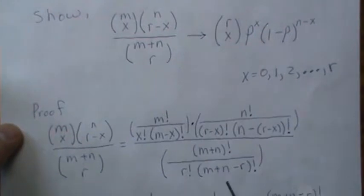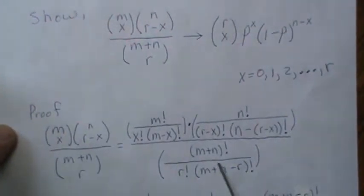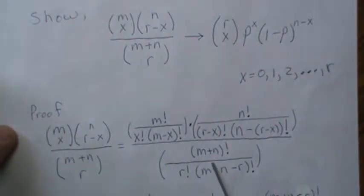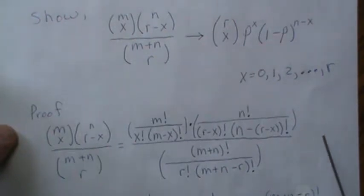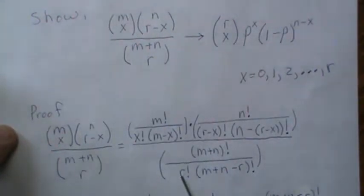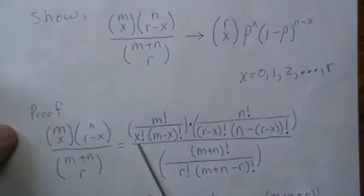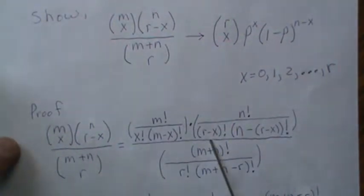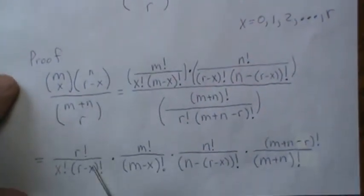So now when we look at this, this piece is a fraction, so you invert and then multiply. So what we're going to do is we're going to grab this r, this x, and this r minus x, and we're going to bring it out front.